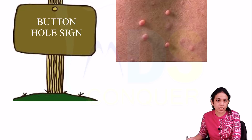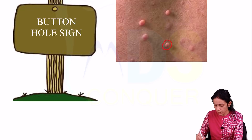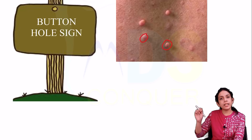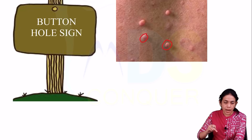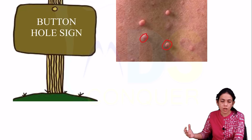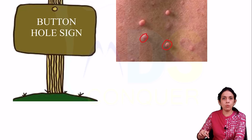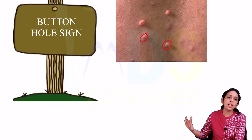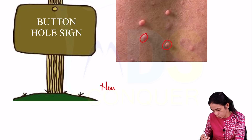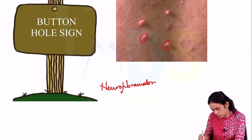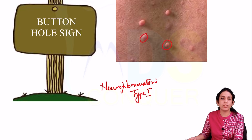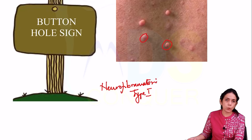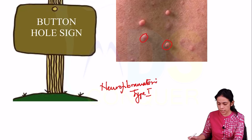Next is the Buttonhole sign. When digital pressure is applied on lesions, they go in, and when the pressure is released, they immediately pop out. This is seen with neurofibromatosis type 1.